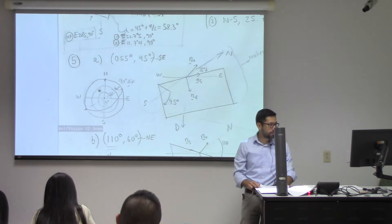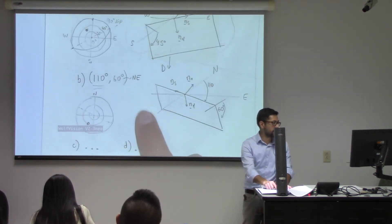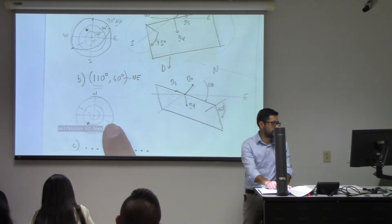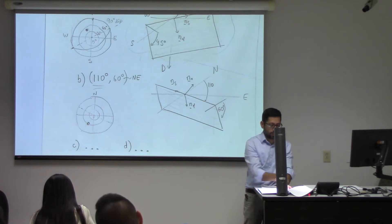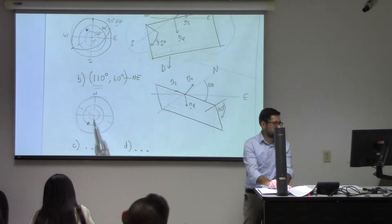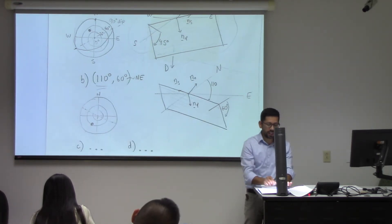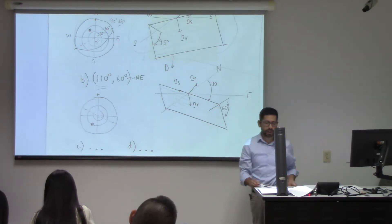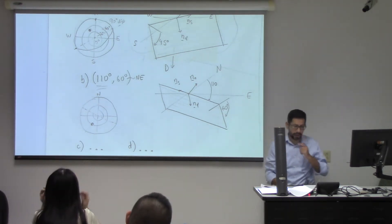The other problems are very similar. This is, for example, 110 strike, 60 degrees towards the northeast. Remember, the point is going to be always opposite to where the fault is dipping. C and D are very similar, and I encourage you to check that with the app that I sent you.